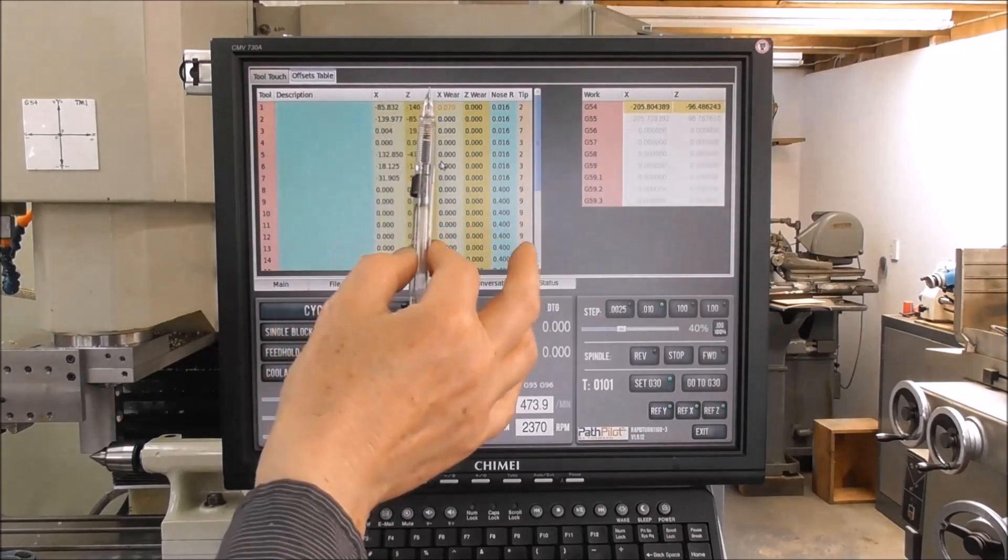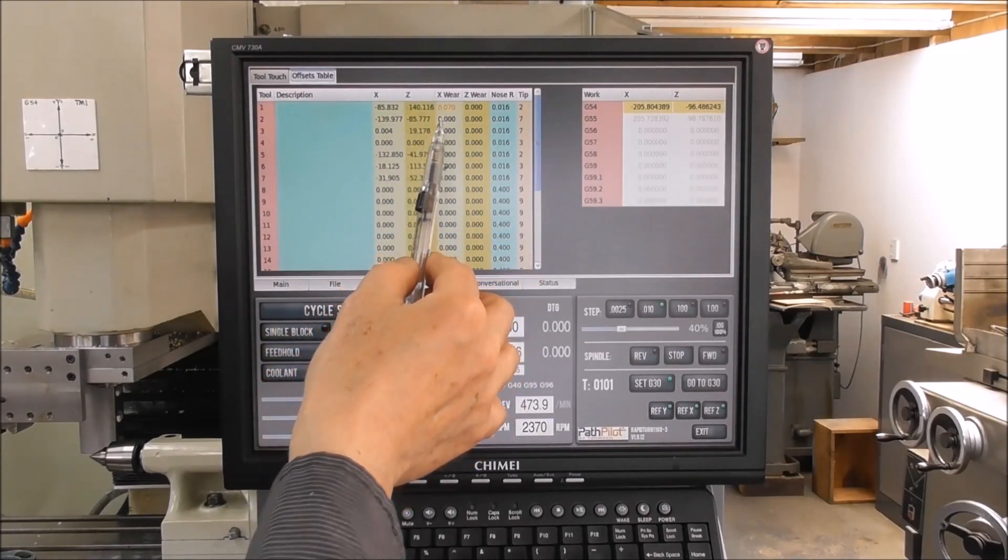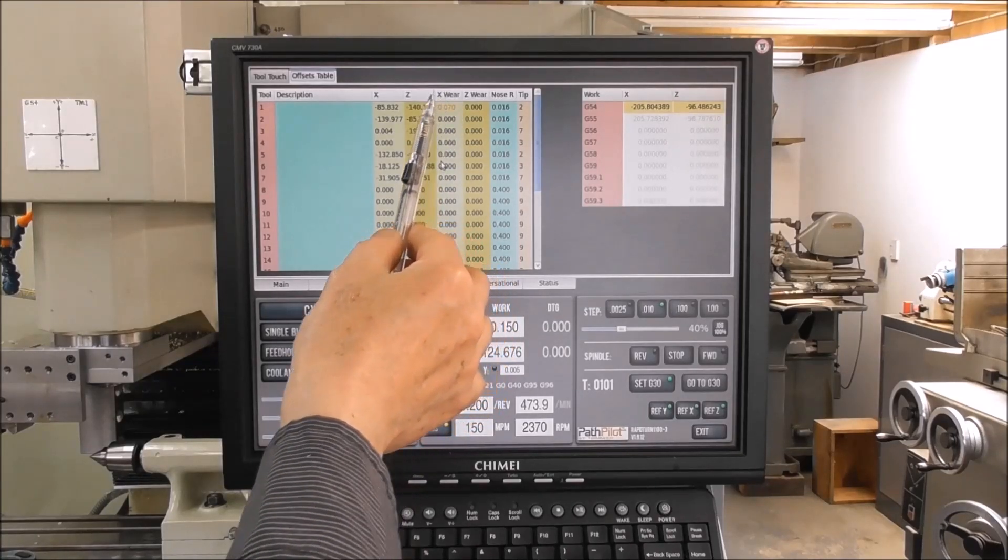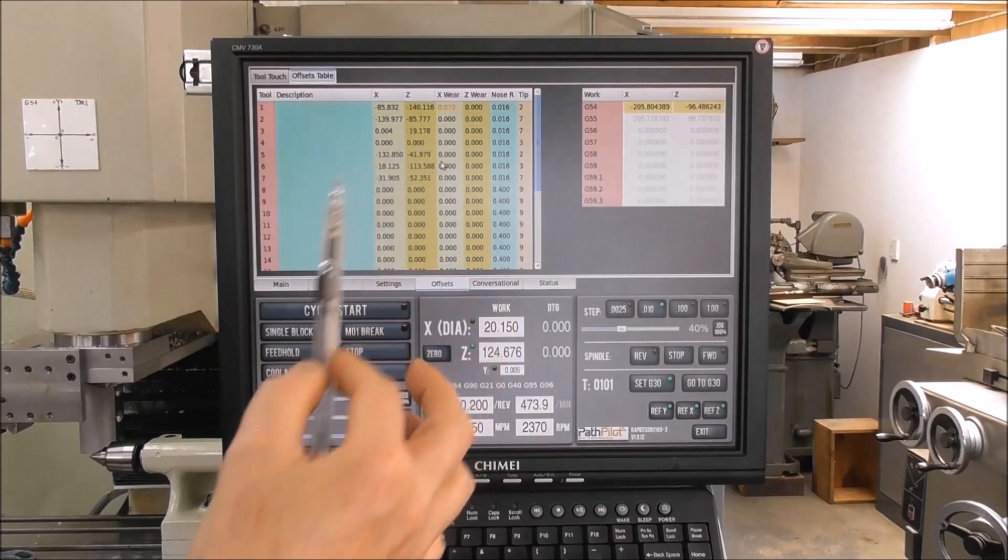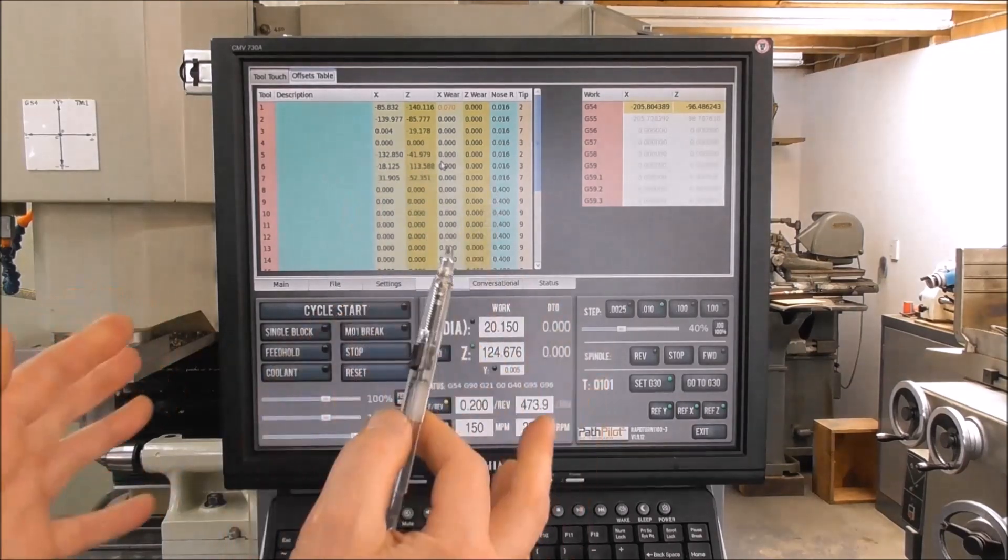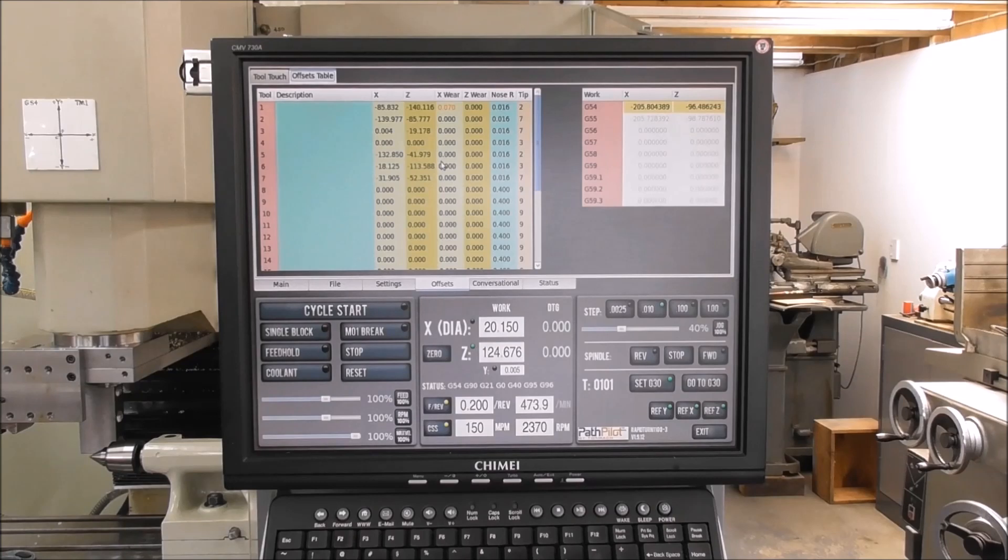I'm really sold on a CNC lathe versus a manual lathe because there's all of these little advantages that I haven't thought of. The other advantage is despite the errors in the machine - and there always are errors in a machine tool - once you've compensated for them, it repeats itself and repeats the same errors every time. That's just the nature of mechanics.